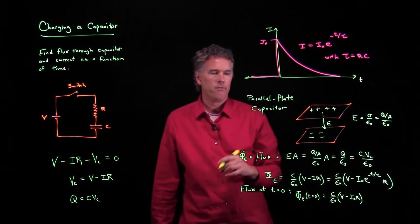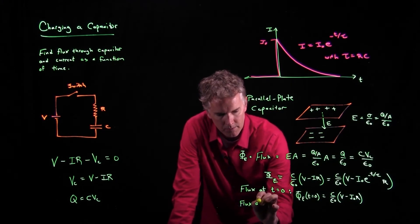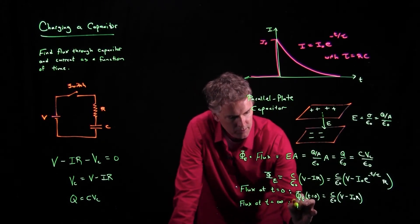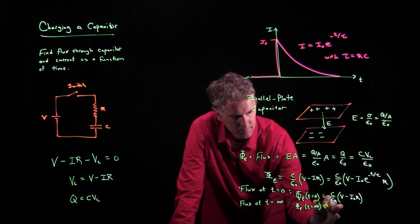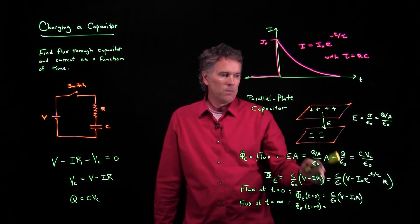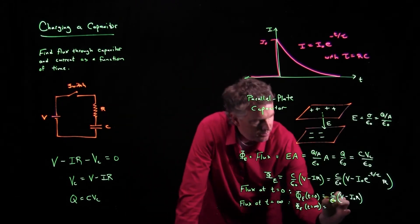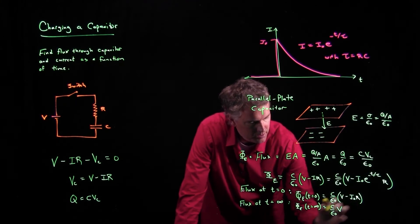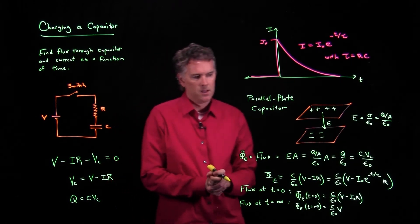What about at very long times? As time increases and we go to infinity, what is the flux? If I put in T equals infinity there, E to the minus infinity is equal to zero. And so we just get C over epsilon naught times V. All of that other stuff goes away. That's pretty cool.